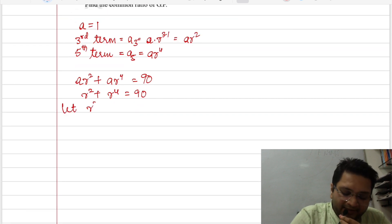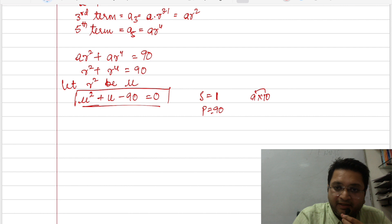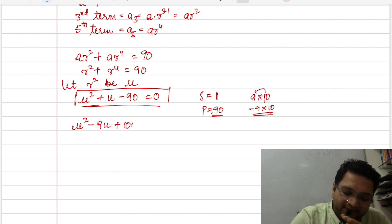Let r² be u. So we can write straight up u² plus u minus 90 is equal to 0. So I need a term such that the sum will come 1 and its product is 90. So if you see 9 into 10, when we have plus them, it will result in 1. So 10 minus 9 can be 1 and minus 9 into 10 will be minus 90. So u² minus 9u plus 10u minus 90 is equal to 0.